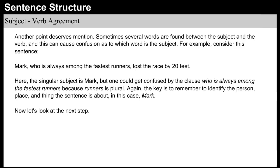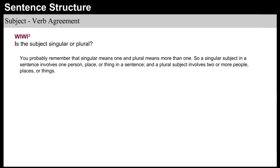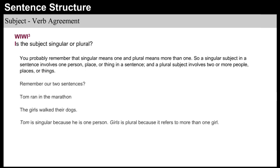Now let's look at the next step: Is the subject singular or plural? Singular means one, and plural means more than one. A singular subject in a sentence involves one person, place, or thing, and a plural subject involves two or more people, places, or things. Remember our two sentences: 'Tom ran in the marathon' and 'The girls walked their dogs.' Tom is singular because he is one person. Girls is plural because it refers to more than one girl.